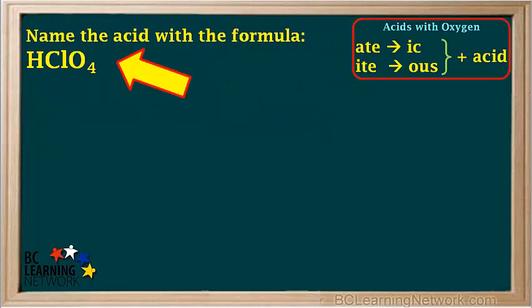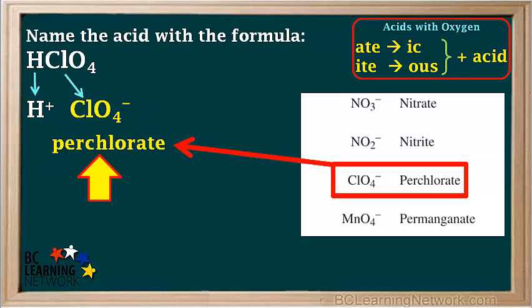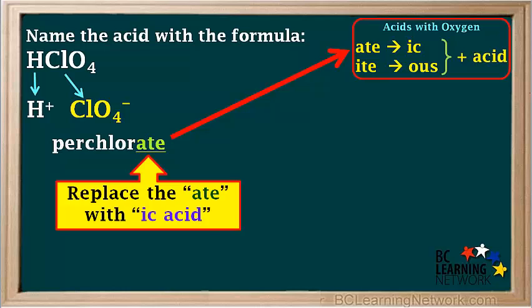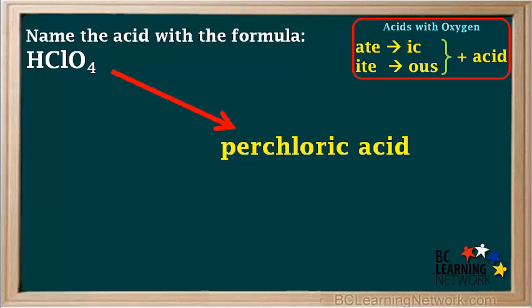Let's do a few examples. We're asked to name the acid with the formula HClO₄. Acids are all ionic, so we can break up HClO₄ into H⁺ and ClO₄⁻ ions. The polyatomic ion ClO₄⁻ is called perchlorate, which ends in the letters -ate. The rule for an acid with a polyatomic ion ending in -ate is to replace the -ate with -ic and add the word acid. So the name of the acid HClO₄ is perchloric acid.